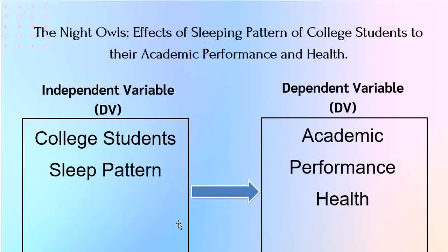Ito yung mga bagay o mga tao na pag-aaralan natin sa research, kaya sila independent variable. Ngayon dumako naman tayo sa dependent variable. Bakit academic performance and health yung dependent variable? Ibig sabihin kasi nito, yung ating dependent variable na academic performance and health ay mangyayari — malalaman natin kung may effect ang sleep pattern sa academic performance ng college students. Remember, pag sinabi nating dependent variable, yung magiging result ng sleep pattern ng college students ay yung academic performance.